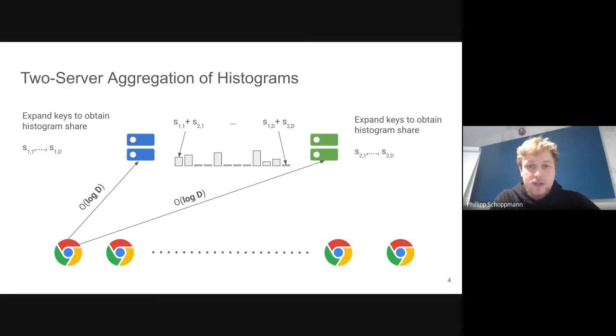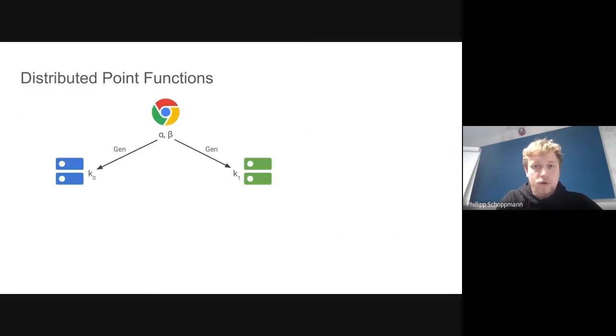How does this work in more detail? We're going to use a technique called distributed point function. This function is parameterized by two values, alpha and beta. These correspond in the vector setting to the location and value of the non-zero in the one-hot vector of the client. The client can use alpha and beta and the DPF key generation algorithm to generate two shares, one for each server.